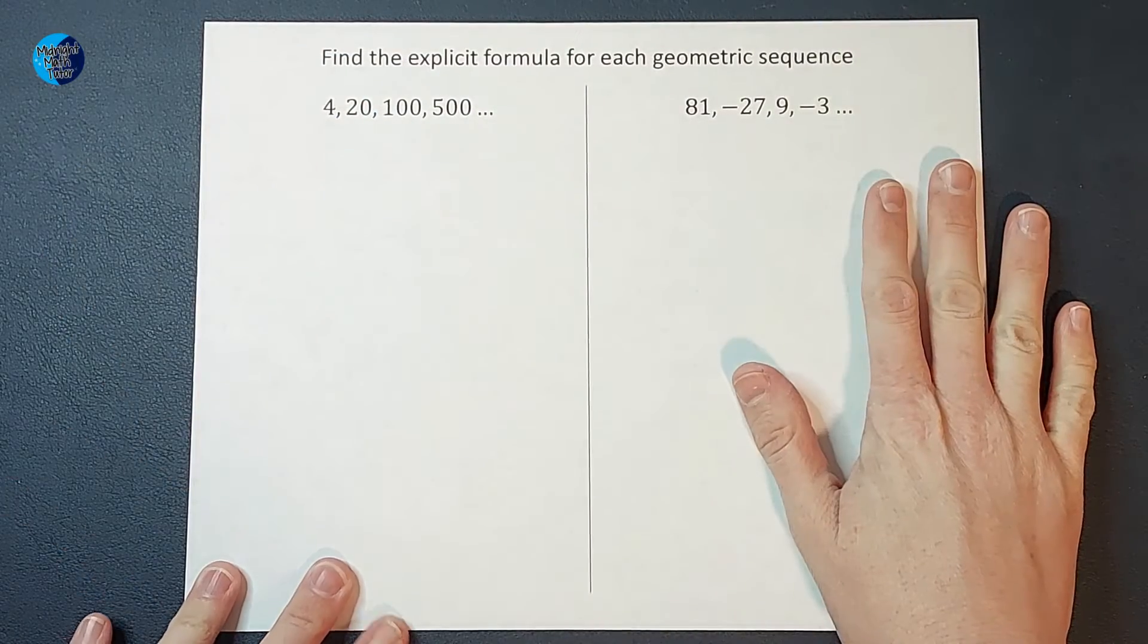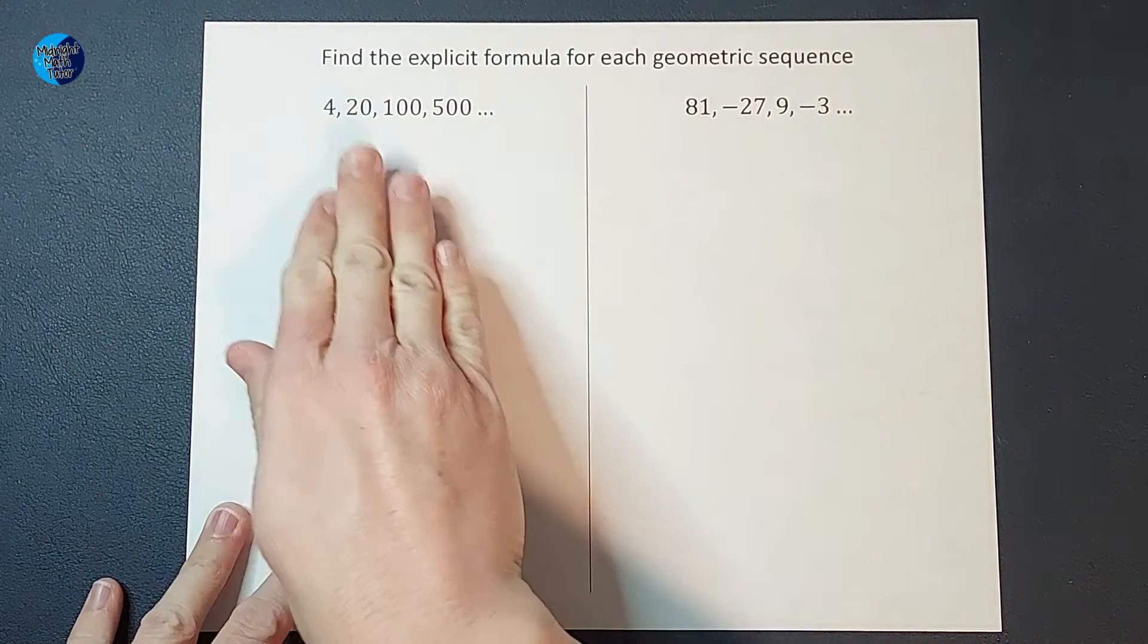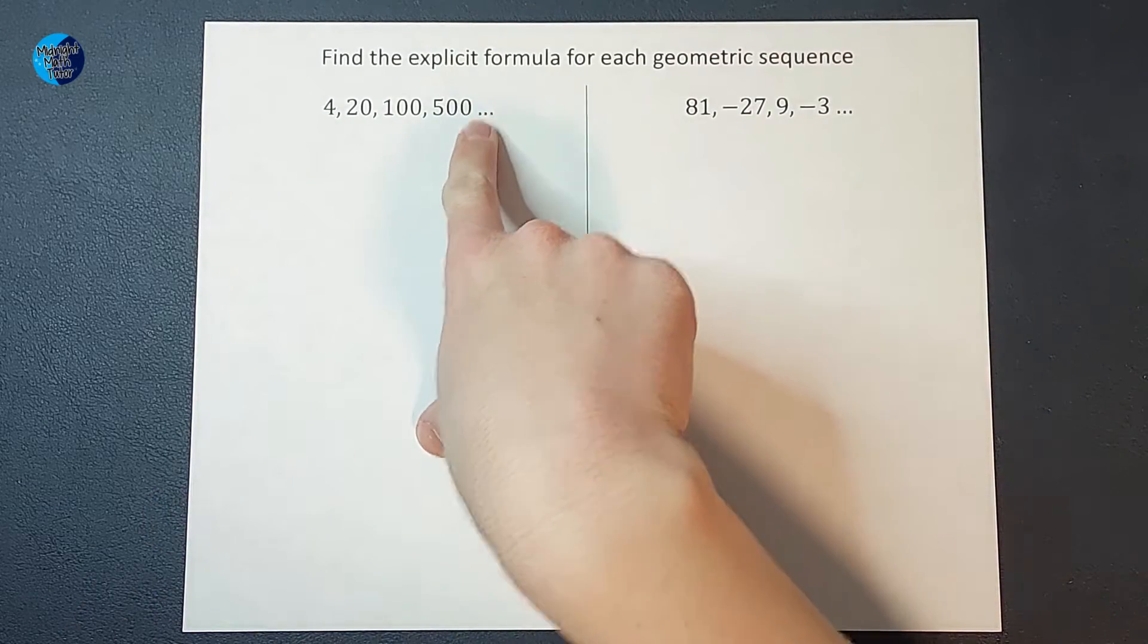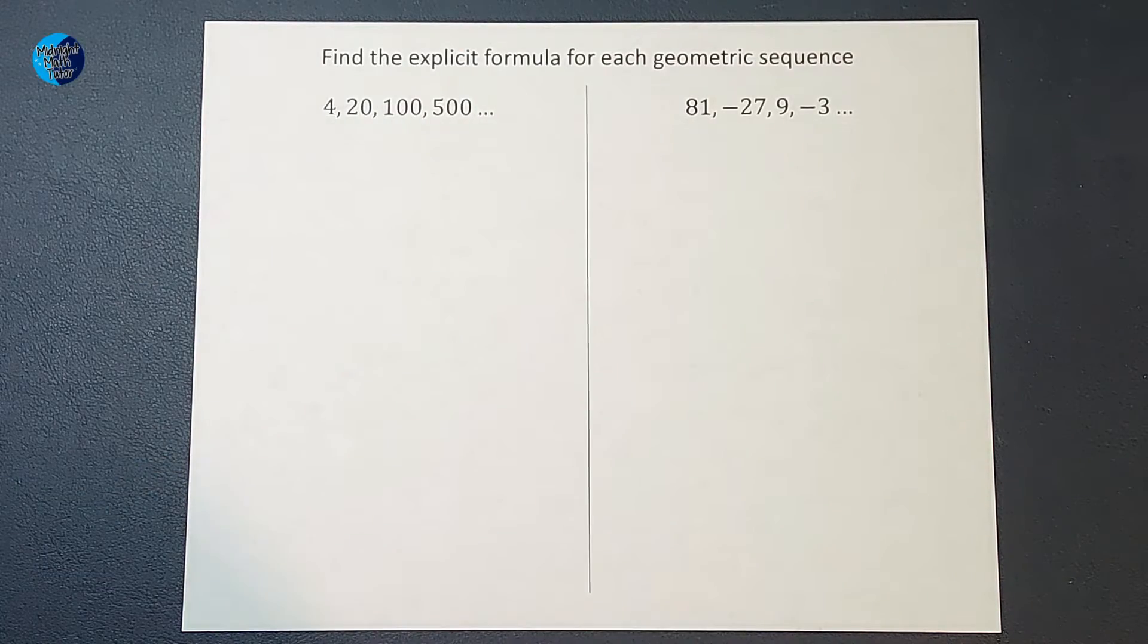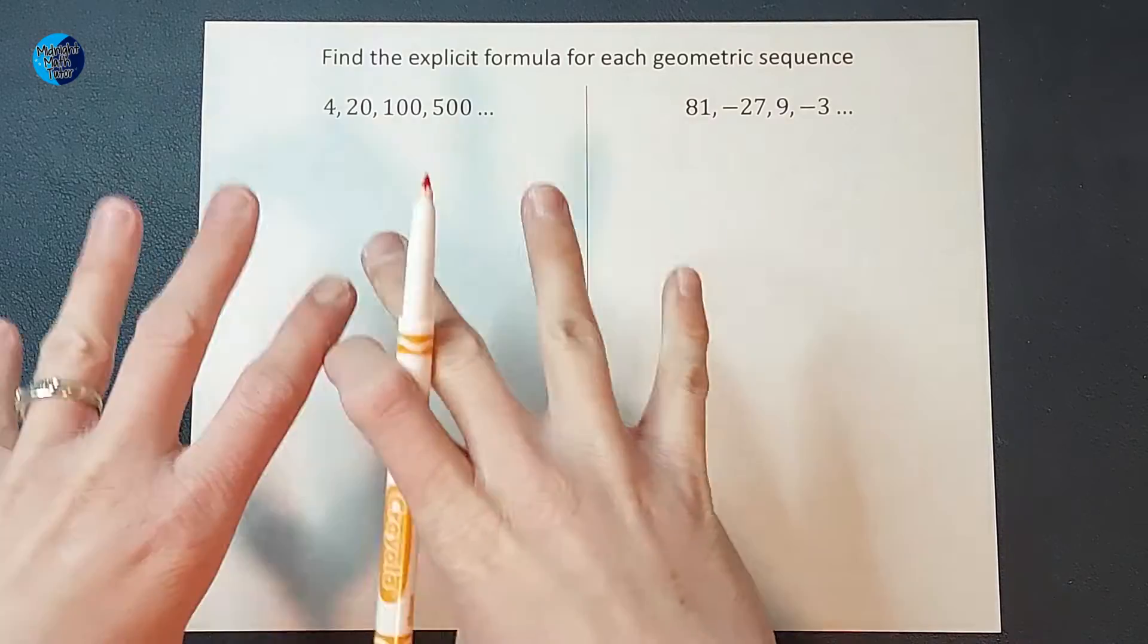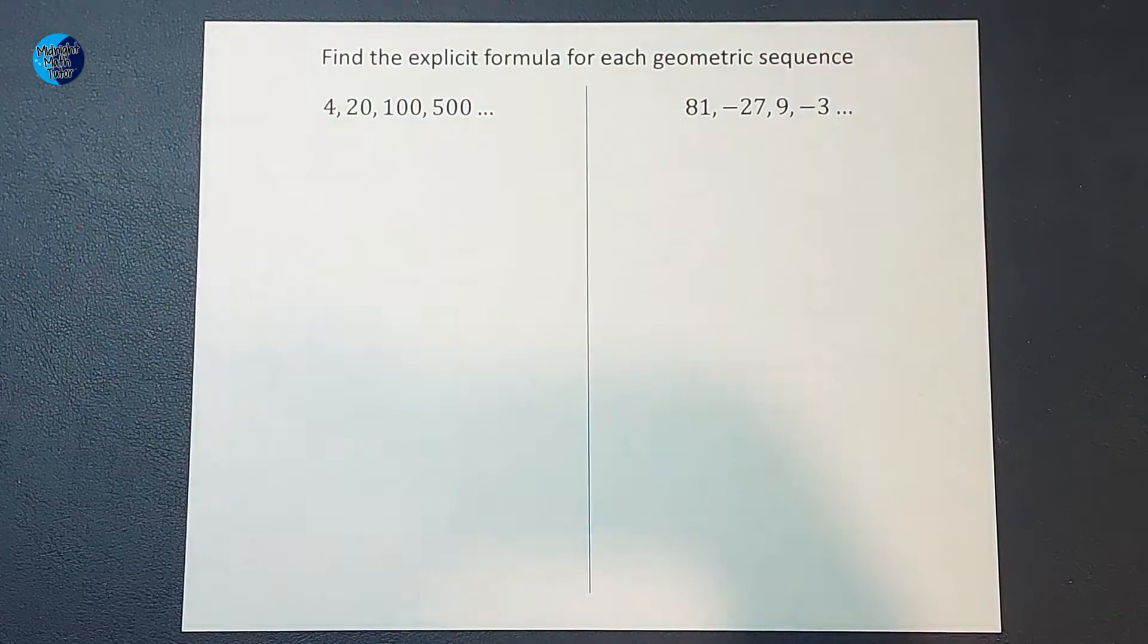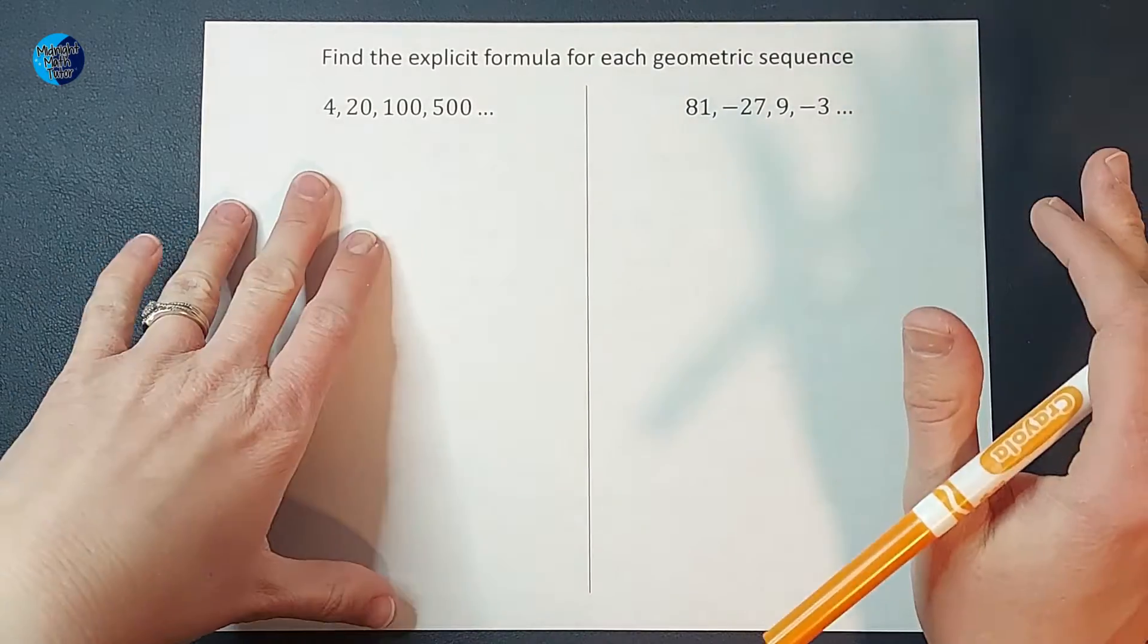These are sequences, right? What is the purpose of the explicit formula you ask? Well, good question. It is to find more numbers in each of these sequences. This dot dot dot here means guess what, this sequence keeps going. It doesn't stop after four numbers. The purpose of the explicit formula is to find more numbers in this sequence easily. So why is it called explicit? I don't know. I know it's a little weird.